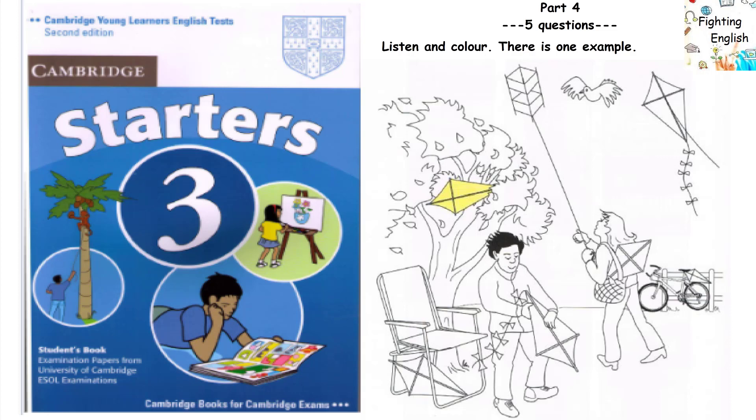2. Some kites are flying. They're beautiful. Can I colour one? Colour the kite between the bird and the tree. Can I colour it blue? Colour it blue.